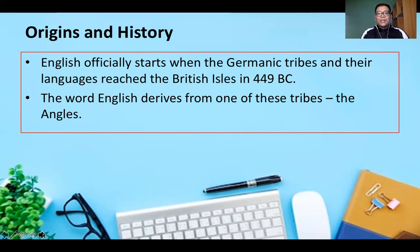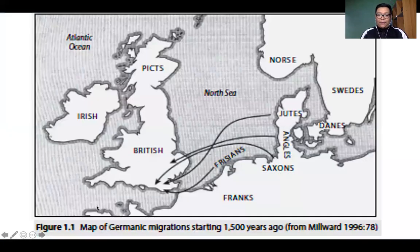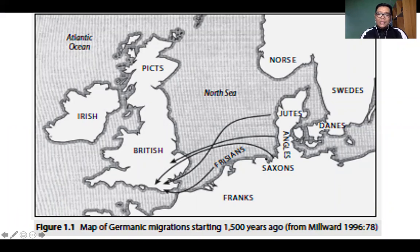English officially starts when the Germanic tribes and languages reached the British Isles in 449 AD. The word 'English' derives from one of these tribes, the Angles — and as seen on the language family tree, Anglo-Frisian is primarily the prototype language of English. A map shows the migration of different cultures to the British Isles, including the Jutes, Angles, Saxons, and Frisians, whose migration also contributed to the features of the current language in the British Isles.